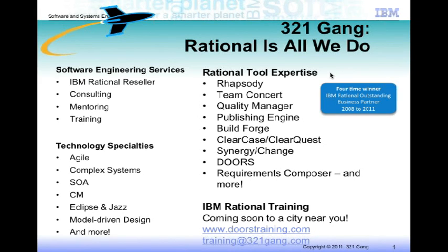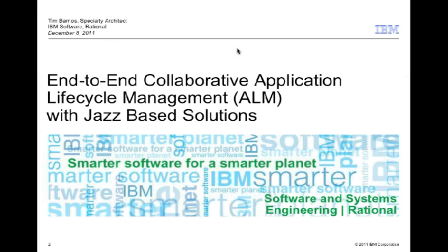We're going to talk today about Rational's latest set of technologies that have to do with application lifecycle management. In the Rational world, we call that ALM — application lifecycle management. This is something that Rational has been building for about six or so years. It was first released as a beta around that time frame, and it's been in production ever since. It's on its third major release of tools on this technology.